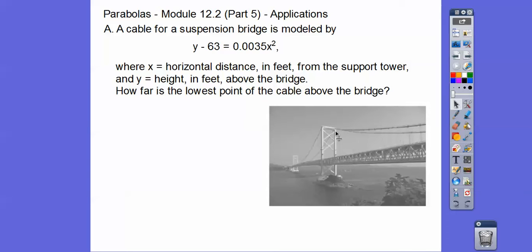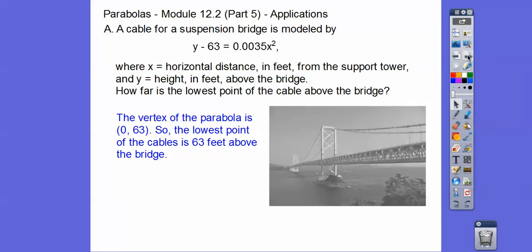How far is the lowest point of the cable? Well, the lowest point is that vertex point. So this is like x minus 0 squared, and here's our y minus k. The vertex is at (0, 63), so the lowest point is always your y coordinate. It's going to be that y equals 63 right there. So 63 feet above the bridge. So can you see that cable going down and then coming back up?